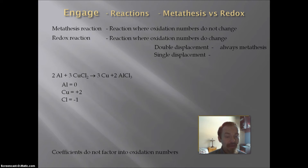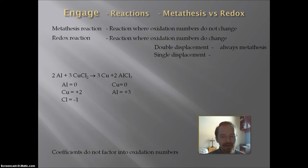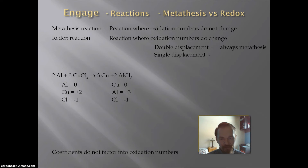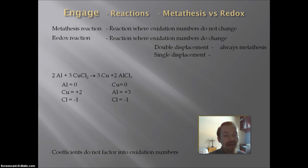On the product side, copper is now the element, so its oxidation number is 0. In aluminum chloride, aluminum is a monatomic ion with a charge of plus 3, so its oxidation number is plus 3. Chloride is a monatomic ion with a charge of minus 1, so its oxidation number is minus 1. So aluminum goes from 0 to plus 3, and copper goes from plus 2 to 0. Chloride stays the same. Since oxidation numbers are changing, this is a redox reaction.